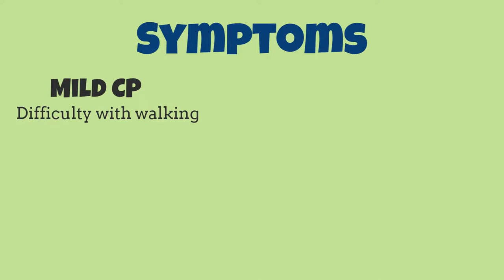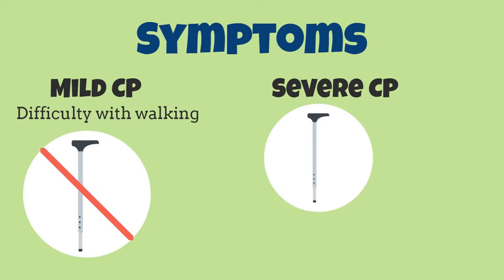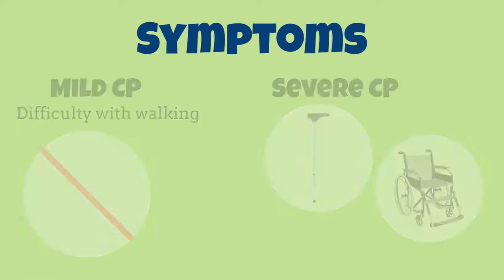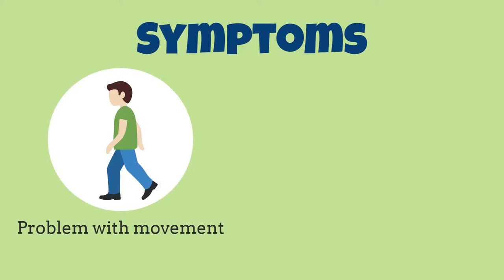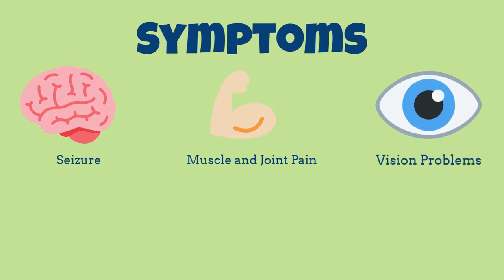The symptoms of cerebral palsy can vary from person to person. A person with mild cerebral palsy usually has slight difficulty with walking and may not need any special equipment to help them. In contrast, a person with severe cerebral palsy most often needs special equipment to help them with walking, or may not be able to walk at all. However, all cerebral palsy patients have problems with movement and posture, with most patients also having conditions such as seizures, muscle and joint pain, and problems related to vision, hearing, or speech.